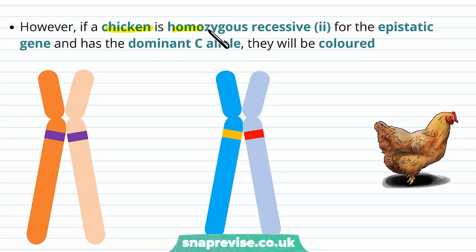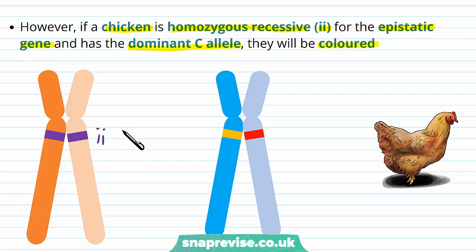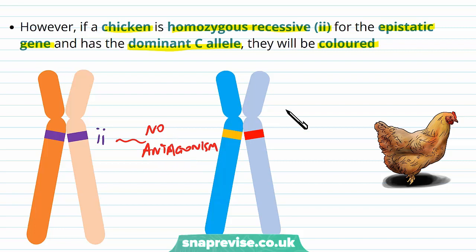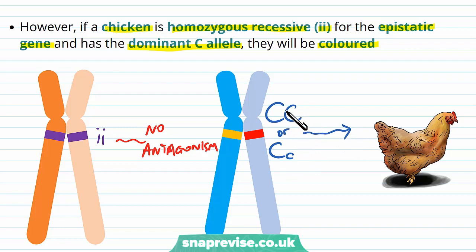But if the chicken is homozygous recessive with two little i's in the epistatic gene, and has the dominant C allele in the hypostatic gene, it will be coloured. With two little i's the antagonism doesn't work, so if the chicken has large C, large C or large C, little c, one is dominant so it will be coloured. If it had little c, little c, it would be white.